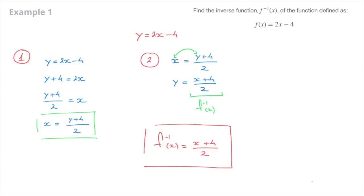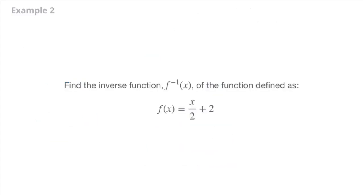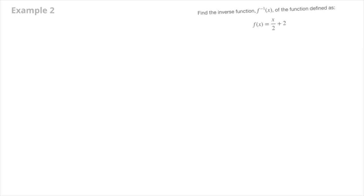Let's look at another example. In this second example, we need to find the inverse function of the function defined as f of x equals x over 2 plus 2. I start by rewriting this function in terms of y, so that's y equals x over 2 plus 2. Now we follow our two-step method.